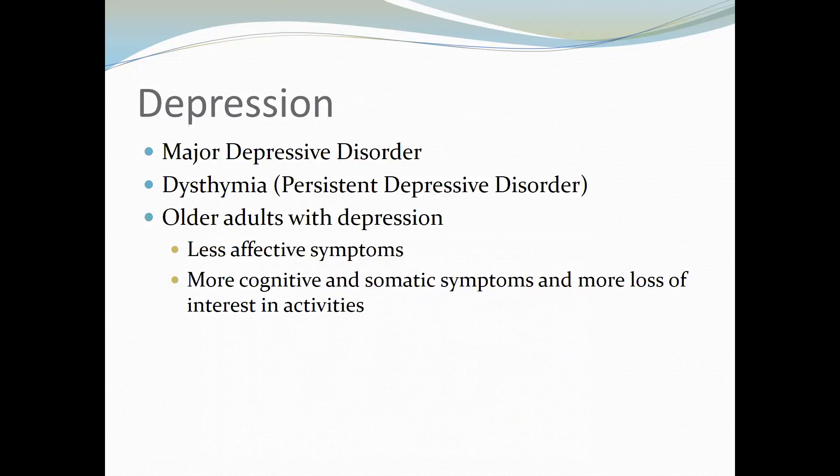When comparing older adults with depression to younger adults with depression, we see some differences. Older adults are less likely to have affective symptoms like feelings of sadness and guilt, and more likely to have cognitive symptoms such as memory problems or executive functioning deficits. They also have more somatic issues like fatigue and sleep disturbance, and more loss of interest in activities.